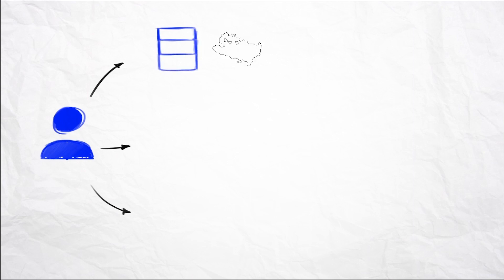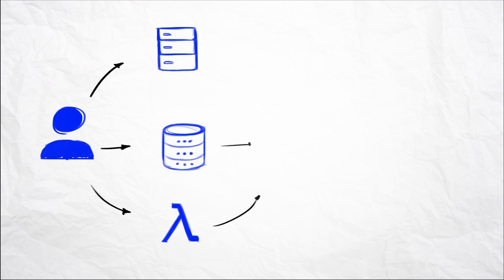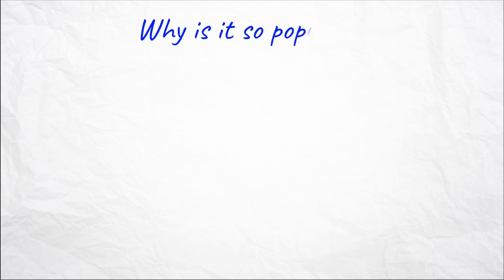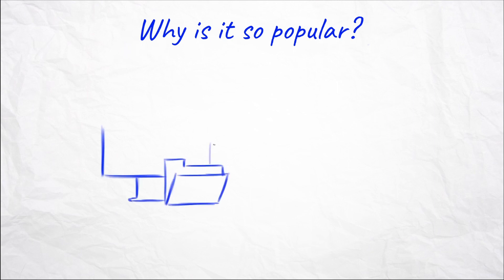Basically, IaC is a method of creating cloud environments to code, or what we also like to call templates. Using this method, you can create an entire infrastructure to run your applications without making any manual or physical configurations, as we used to do in the past. And why is IaC becoming so popular? Because it's a faster, more effective, and more consistent way to create new infrastructures.